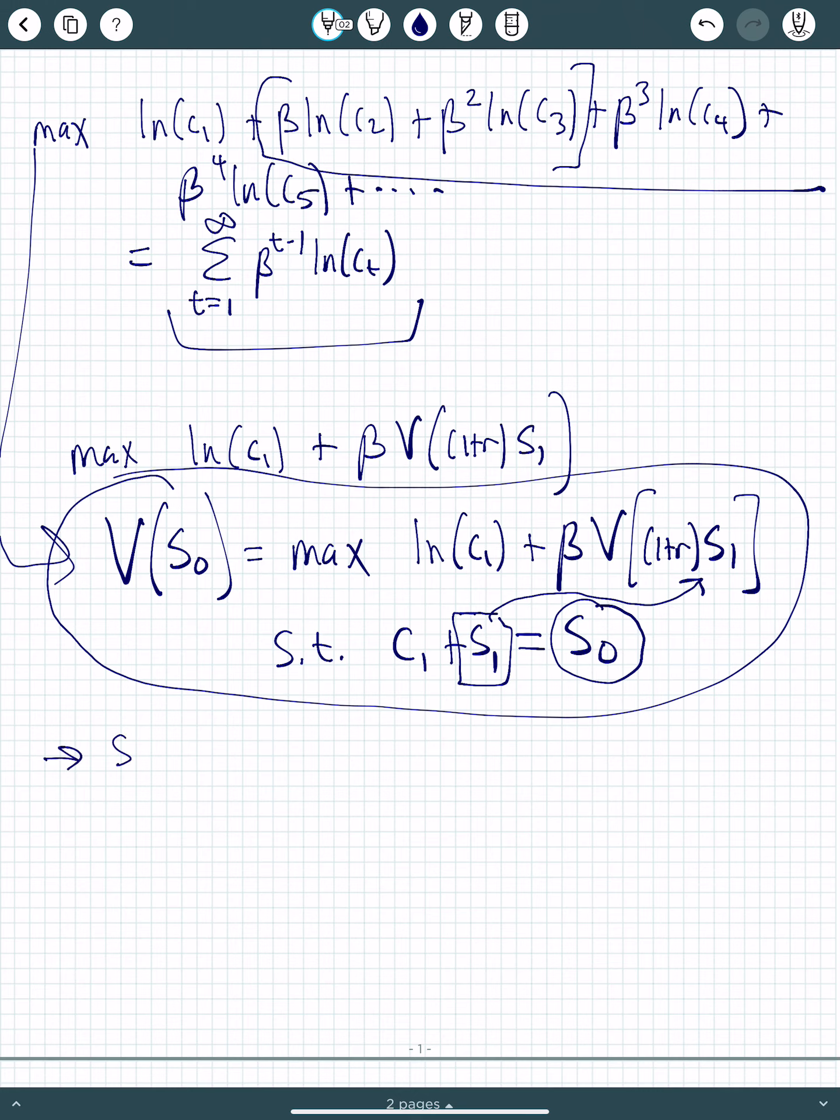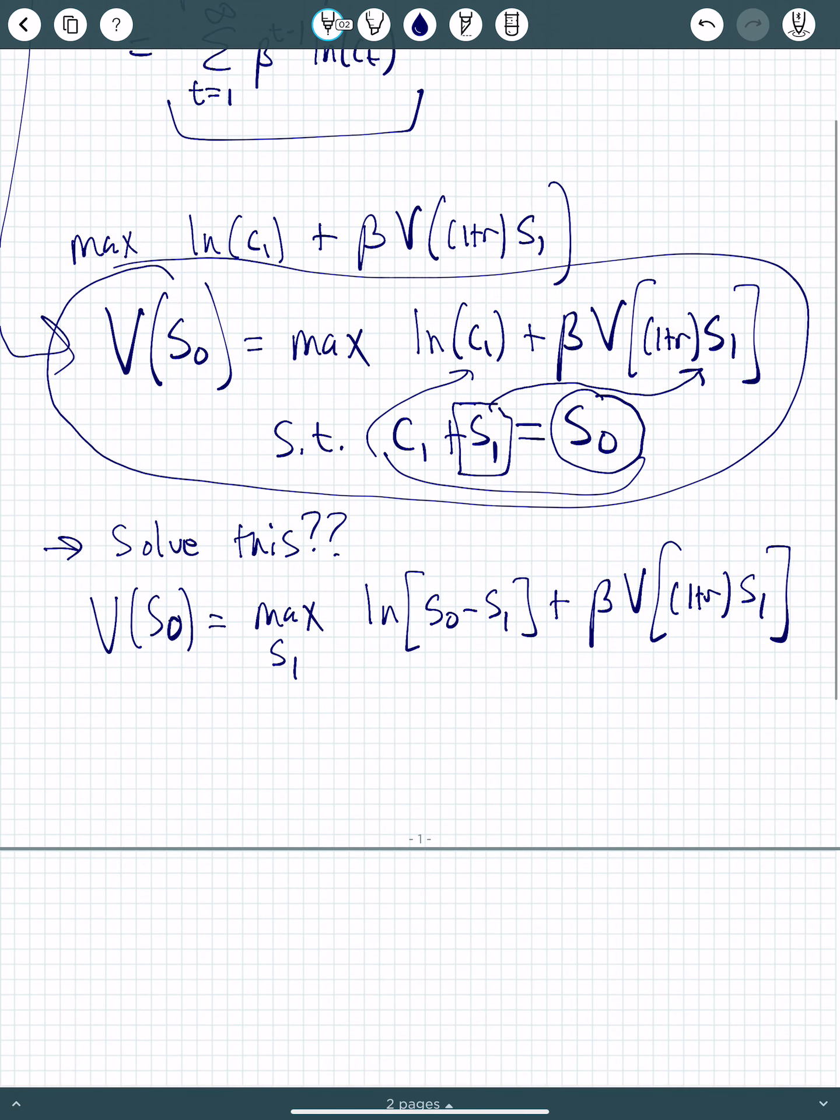Okay, so how do I solve this? Well, I'm going to take a similar path to what I did before. I'm going to plug in for consumption. And so all I'm choosing is s1, natural log of s0 minus s1, plus beta v of 1 plus r times s1. So I can take first-order conditions.